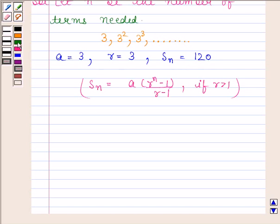By substituting the values, we get 120 is equal to 3 into 3 to the power N minus 1 upon 3 minus 1.